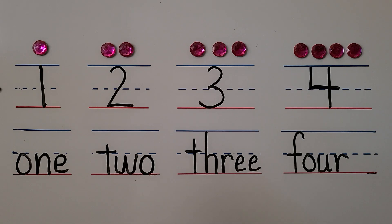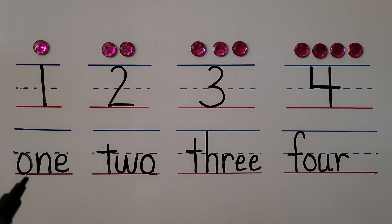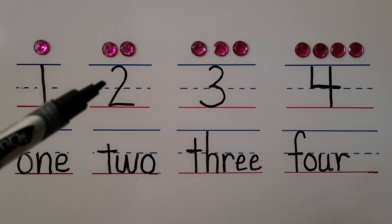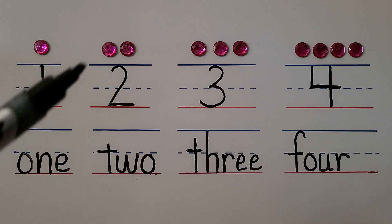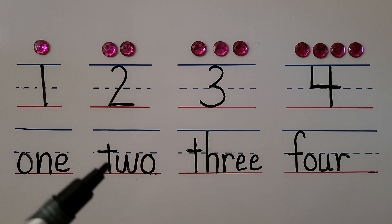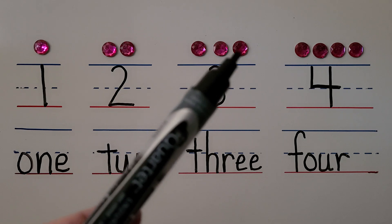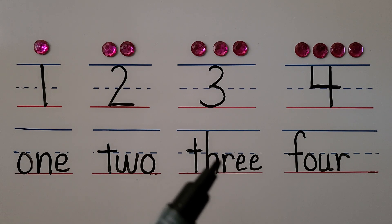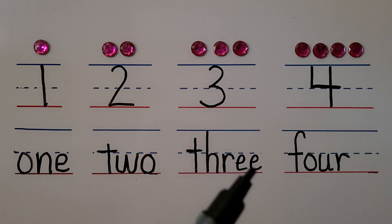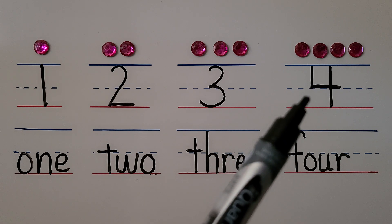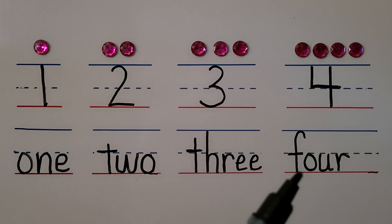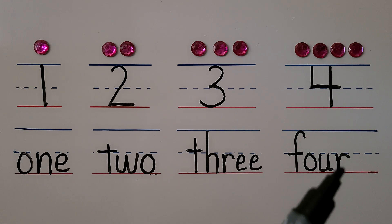Here we have the number one. We have one gem. Here's the word one, O-N-E. Here we have the number two. We have one, two gems. Here's the word two, T-W-O. Here's the number three. We have one, two, three gems. Here's the word three, T-H-R-E-E. Here we have the number four. We have one, two, three, four gems. We have the word four, F-O-U-R.